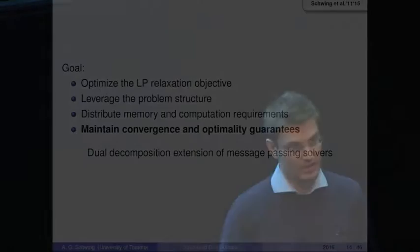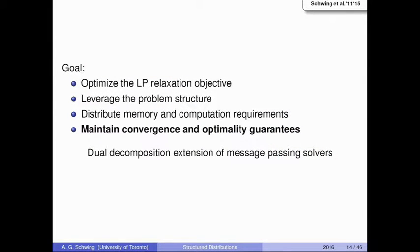Getting back to the question I posed initially: since we know how to at least approximately solve the inference task, how can we do so in parallel on multiple machines? Our goals are: optimize the LP relaxation objective, leverage the problem structure defined via the marginalization constraints, distribute memory and computation requirements, but importantly maintain convergence and optimality guarantees of existing solvers. Meaning if I take my graphical model, split it across multiple machines, and solve it on multiple machines separately, I want to get the same solution as if I solved it on a single machine.